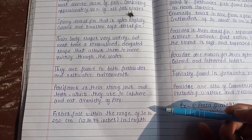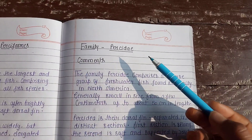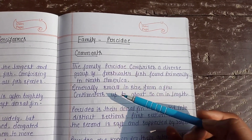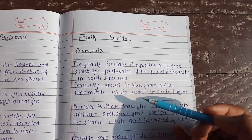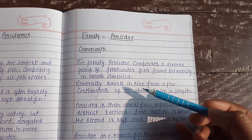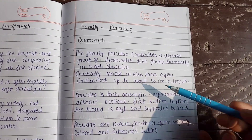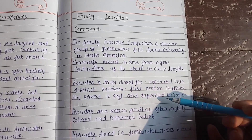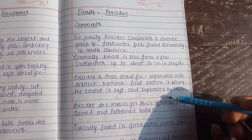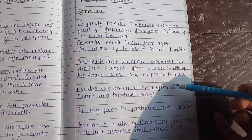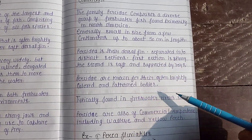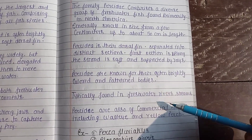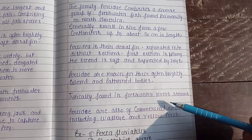That is 12 to 19 inches in length. Here is the family of Perciformes known as Percidae. The family Percidae comprises a diverse group of freshwater fish found in North America. Generally small in size, their dorsal fins are separated into distinct sections — the first section is spiny and the second is soft and supported by rays. They are known for their often brightly colored and patterned bodies, typically found in freshwater rivers and streams.